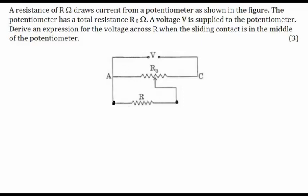We need to know the potential difference between this resistance. There is one more thing given: when the sliding contact is in the middle of the potentiometer, that means this contact is in the middle of this resistor.